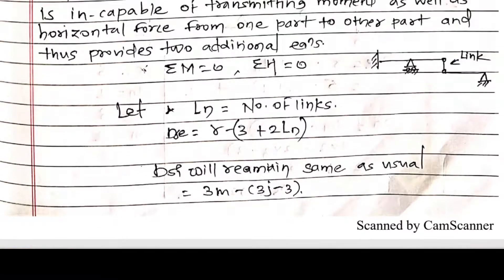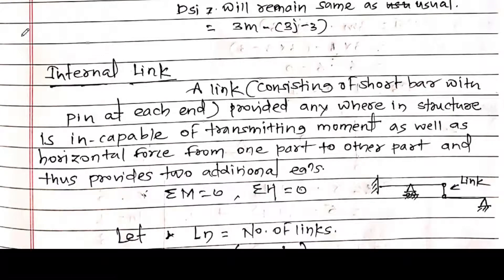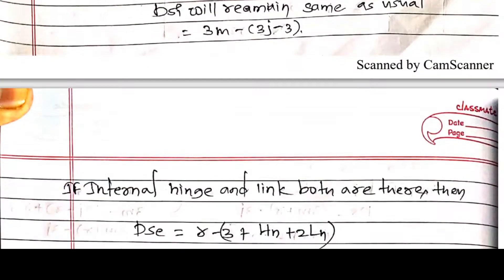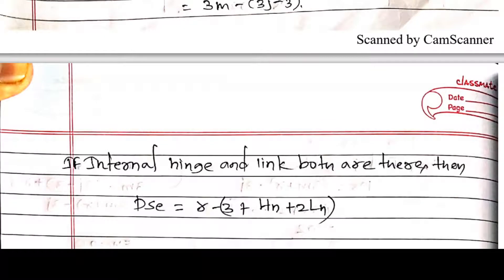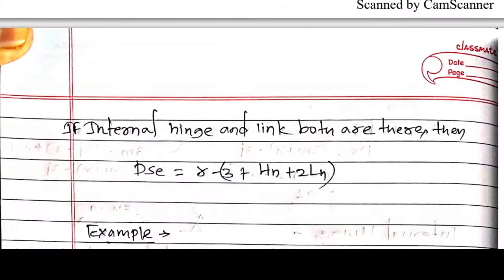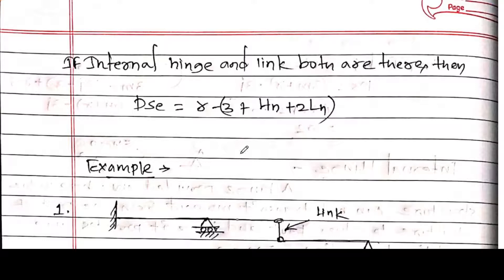DSI remains the same as usual: 3M minus (3J minus 3). If both internal hinges and internal links are present, the formula becomes: DSE = R minus (3 + HN + 2×LN). DSI remains unchanged.